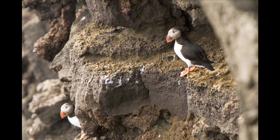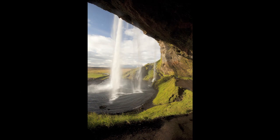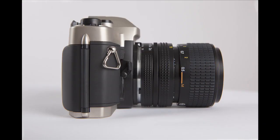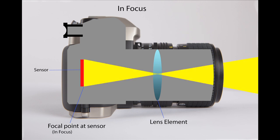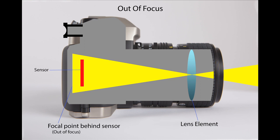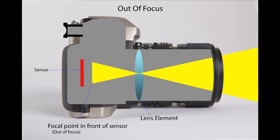With long lenses, distant objects can be made to seem close up. Or with wide lenses, a huge area very close to the camera can be captured. To demonstrate how a basic lens works, let's look at a very simplified version of a lens and camera body. As light enters the lens, it's refracted and focuses at one point inside the camera body. This is known as the focal point — where the frame of film or the sensor is in a digital camera. By moving the lens element forward or backward, the focal point is changed, bringing the image into or out of focus.